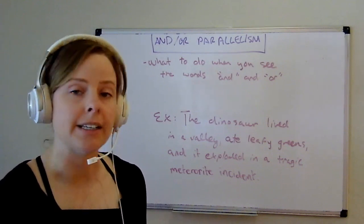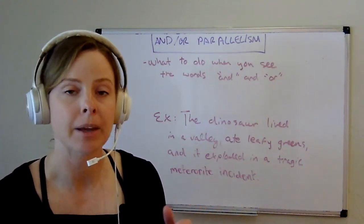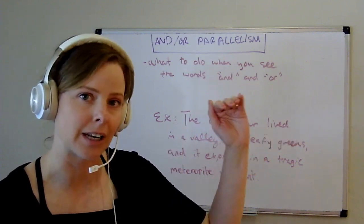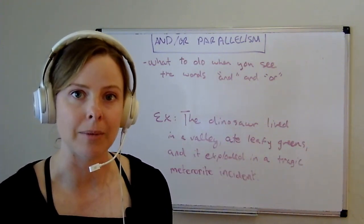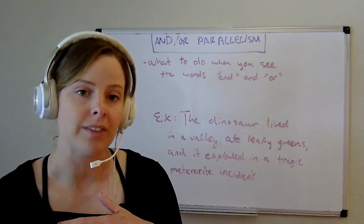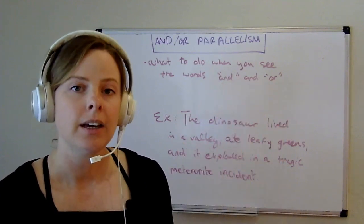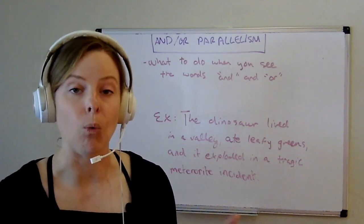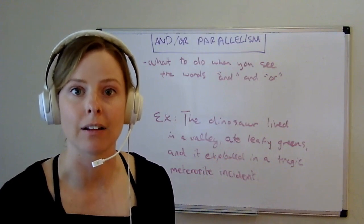So to start out — what is parallelism? As we discussed in the previous video with pairs of words that indicate parallelism, parallelism is just a list. The author will be going along in their sentence and then suddenly break out into a list of different elements. The important thing about these elements is that they grammatically fulfill the same function in the sentence. It's a little bit trickier when you just have an 'and' or just have an 'or,' because you only know one element of that list and then have to determine what else the author is trying to list in parallel.